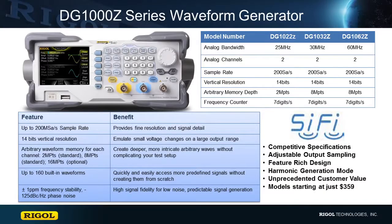This product is a great value for the price. It starts at $359 and comes with 25 MHz along with 160 different functions built in. If you want to learn more about this product or SiFi technology, please check out our website at regalna.com or give us a call.